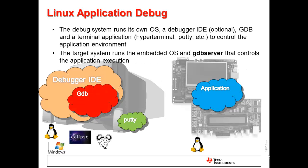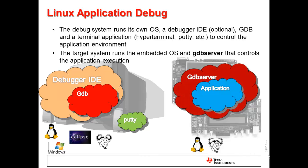Let's take a look at a simplified graphical representation of the Linux application debug environment. On the host side, GDB is running, sometimes from an IDE like Eclipse. A communication transport such as Serial is used to control the application environment. On the target side, the application is running on the target Linux kernel and GDB server controls the application execution.